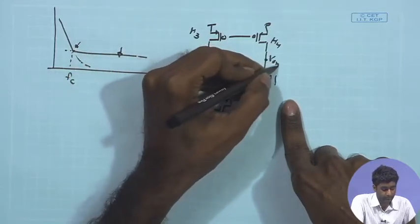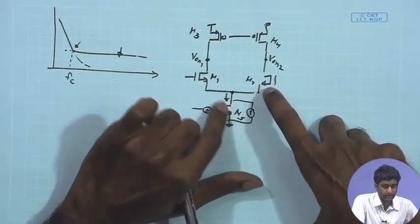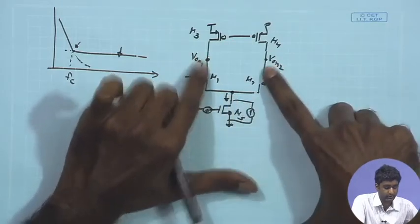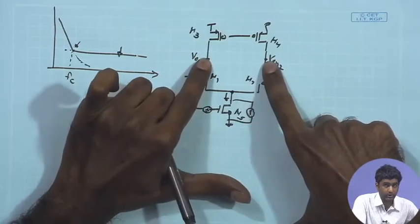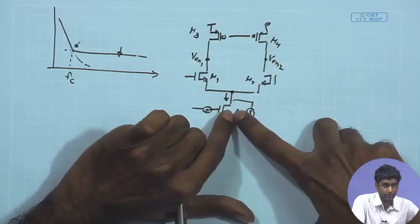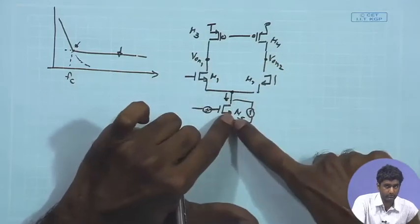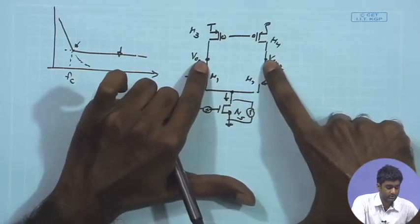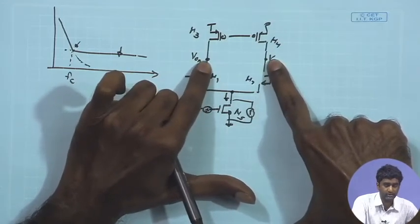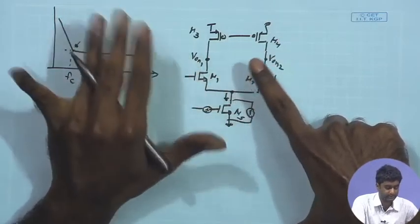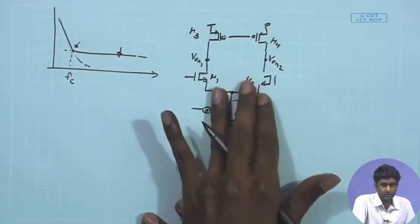The M5 tail transistor acts as a common mode source — its effect is divided between the two branches, producing correlated noise currents at the output nodes. Since we're not concerned with common mode signals, this common mode noise is much less significant compared to differential operation, where it doesn't appear. This is just a small point to note.